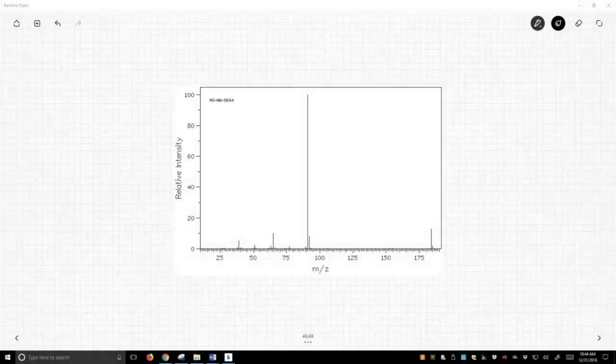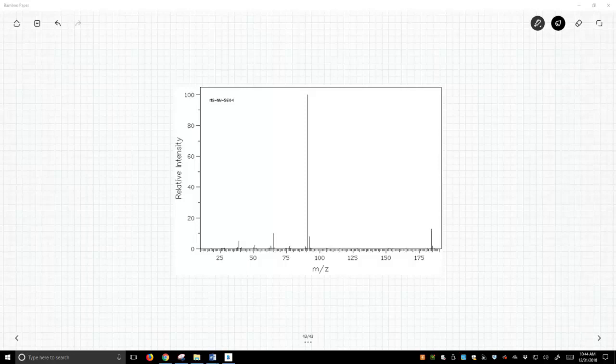Okay, on the screen right now is a mass spectrum, and this mass spectrum is characterized by this huge peak with an m/z of 91.